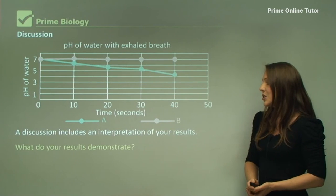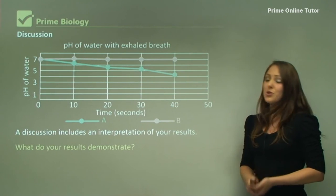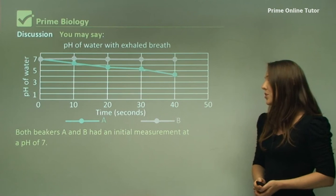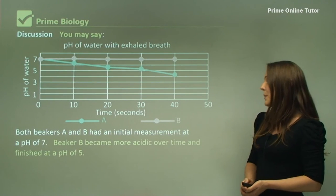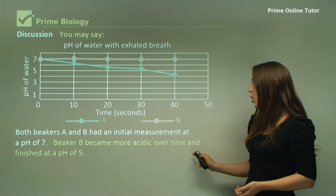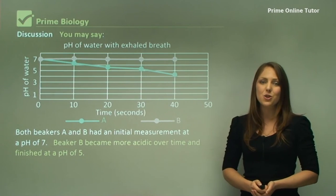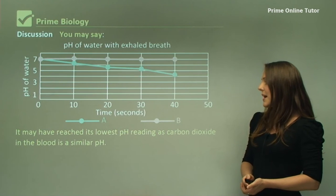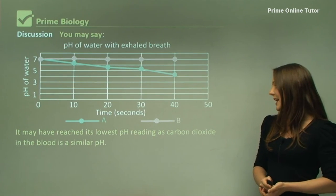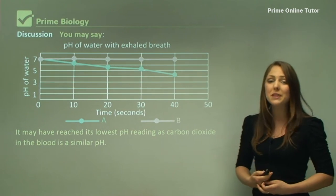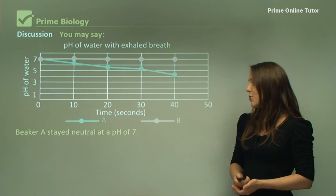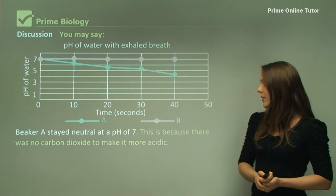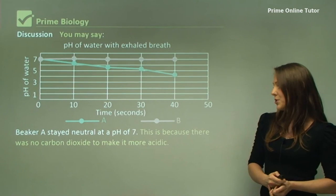Both beakers A and B had an initial measurement at a pH of seven. Beaker B became more acidic over time and finished at a pH of five. It may have reached its lowest pH reading as carbon dioxide in the blood has a similar pH. Beaker A stayed neutral at a pH of seven because there was no carbon dioxide to make it more acidic.